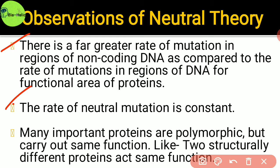Secondly, the rate of neutral mutation remains always constant. For example, the number of substitutions in the alpha chain of hemoglobin always remains constant in mouse, horse, and even in humans.